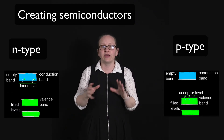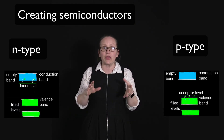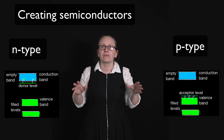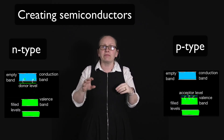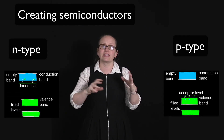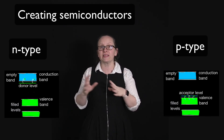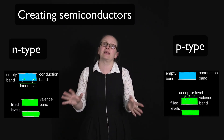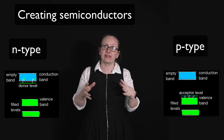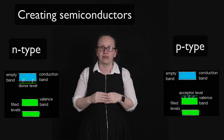When adding these dopant atoms, we don't need to add very many at all. If we replace just one in a million of the silicon atoms with the dopant atoms, we have a very big effect on the electrical conductivity properties of the material.